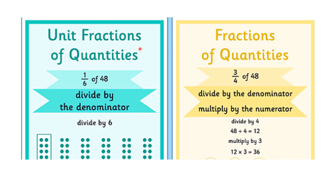Now we have to see unit fraction of quantities. We need to find one over six of forty-eight. Here, 'of' means divide by the denominator. Forty-eight divided by six — six eights are forty-eight — so eight multiplied by one is equal to eight. We circle eight units.